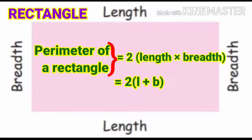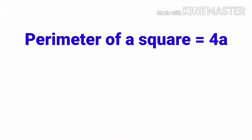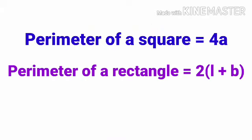So there are two lengths and two breadths. The perimeter of a rectangle equals 2 times length plus breadth, or 2(l + b). Remember these formulas: perimeter of a square is 4a, perimeter of a rectangle is 2(l + b).